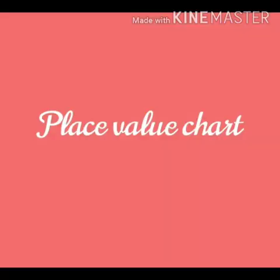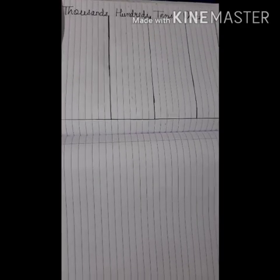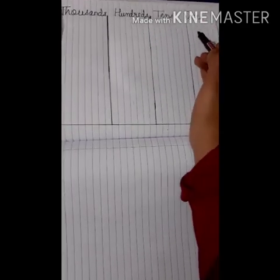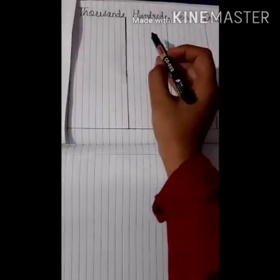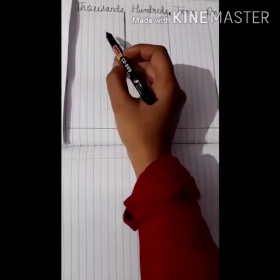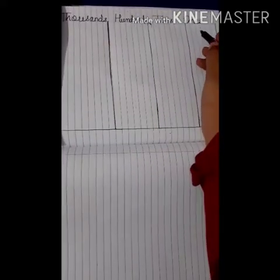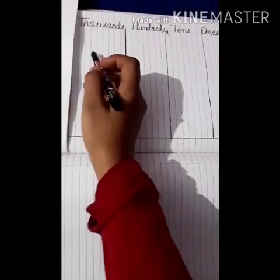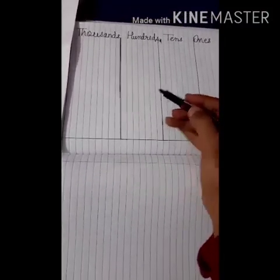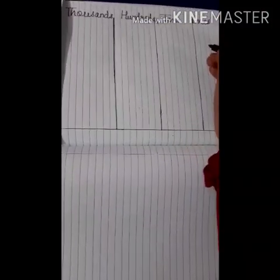So let's see the place value chart. This is our place value chart. We have ones, tens, hundreds, and thousands. In the place value chart, we will always start writing from the right side. This is our left side and this is the right side. In the place value chart, we will always write from the right side.